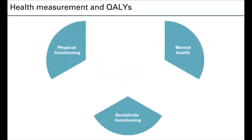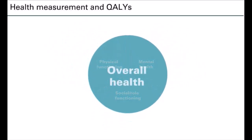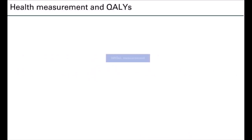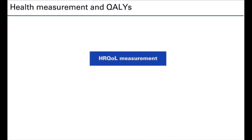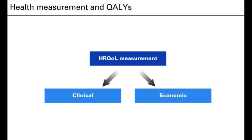Health-related quality of life is often divided into three domains which correspond to the World Health Organization's definition of health, and these may be combined to provide an overall measure of health. It is assessed using standardized questionnaires, which are usually self-administered. There are a large number of instruments available, and these may be divided into two broad categories: those used to measure health-related quality of life as a clinical endpoint, and those used to generate data that can be incorporated in economic evaluation.